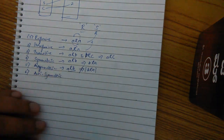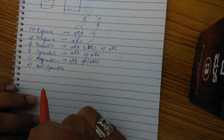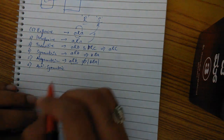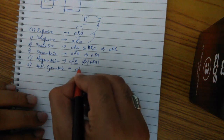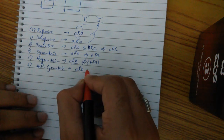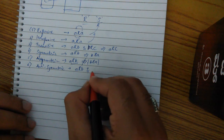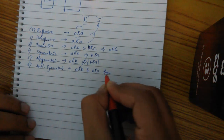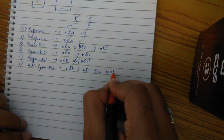Anti-symmetric is a bit different and fun: if A relates to B and B relates to A, then we conclude that A equals B. That is the anti-symmetric property.